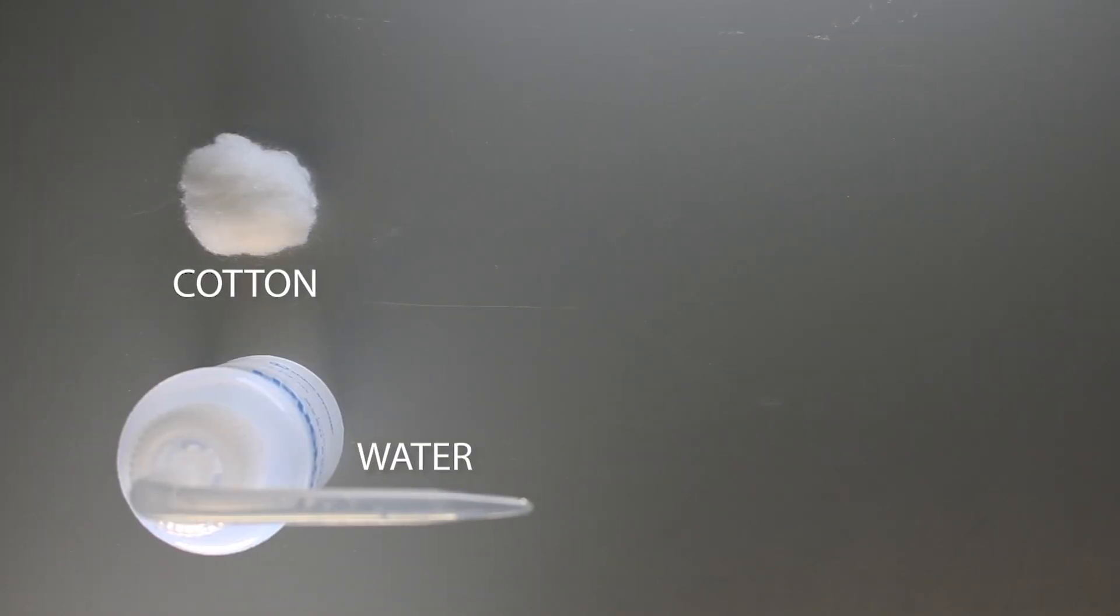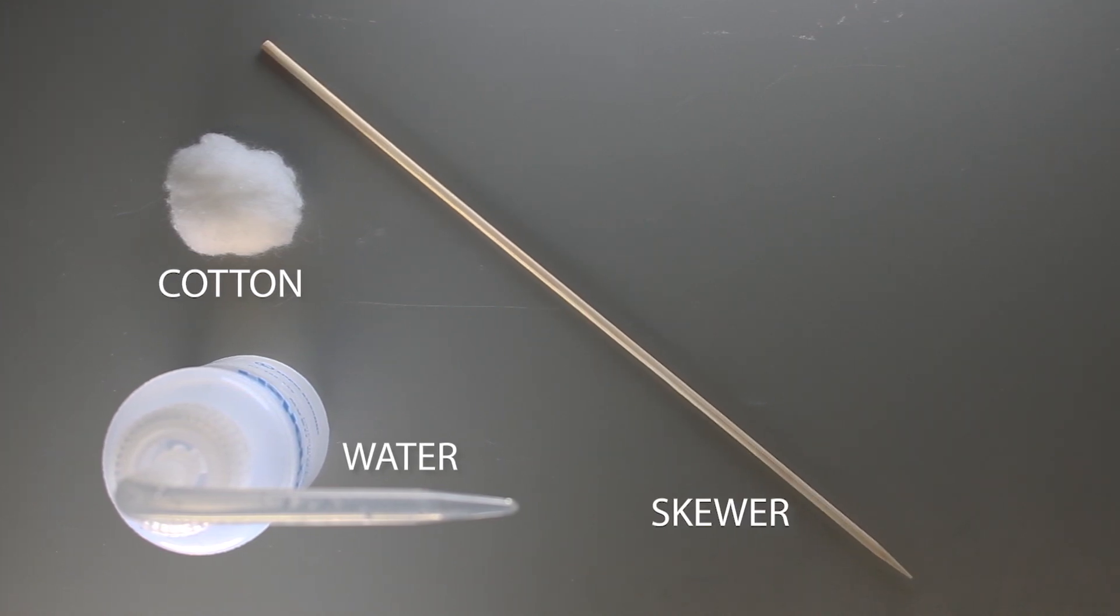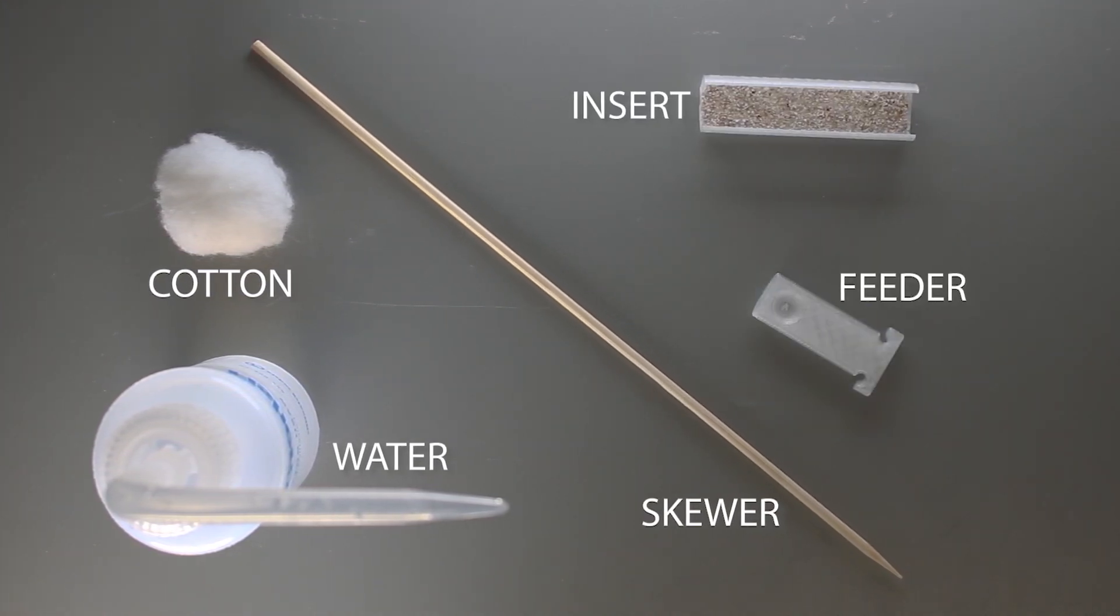Now I'm going to show you how to properly set up a Genesis Test Tube System. For this project you'll need the following: cotton balls, deionized, distilled or bottled water, a skewer, the Genesis Nest Insert, and the Genesis Feeder.